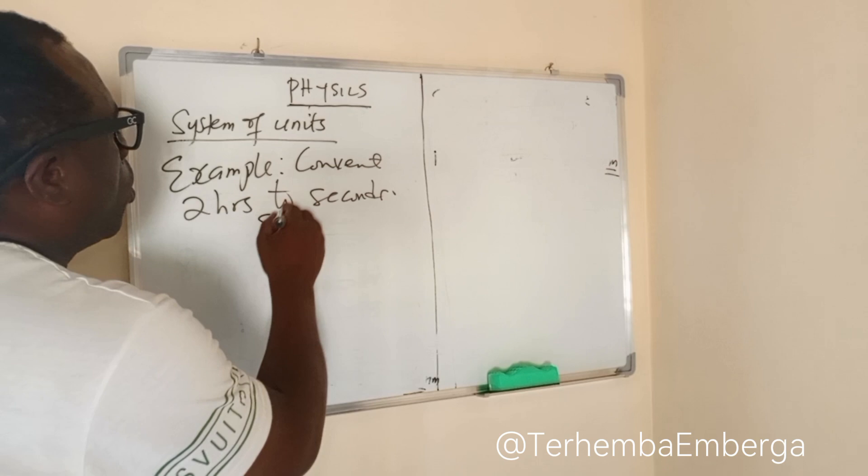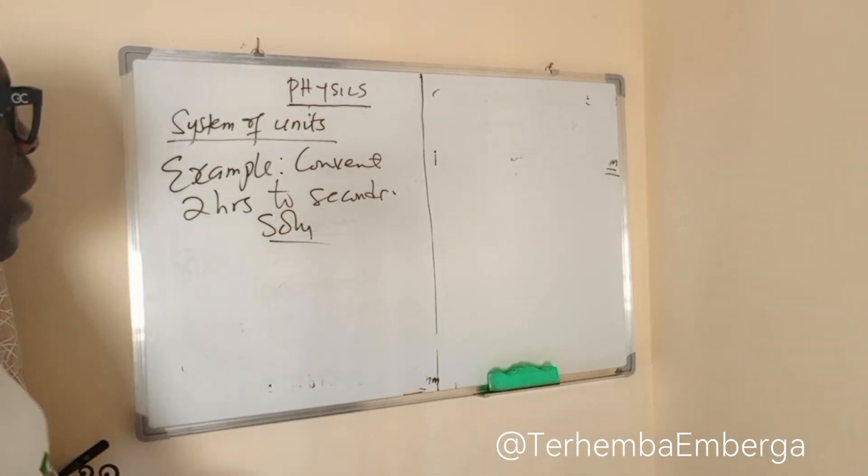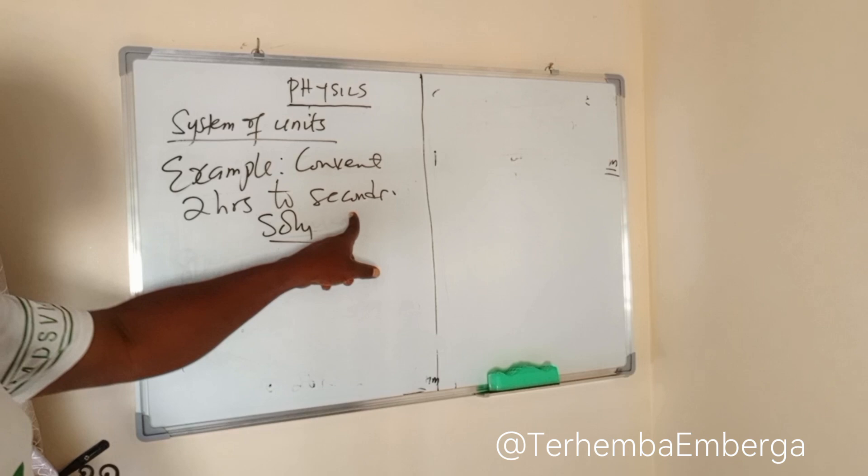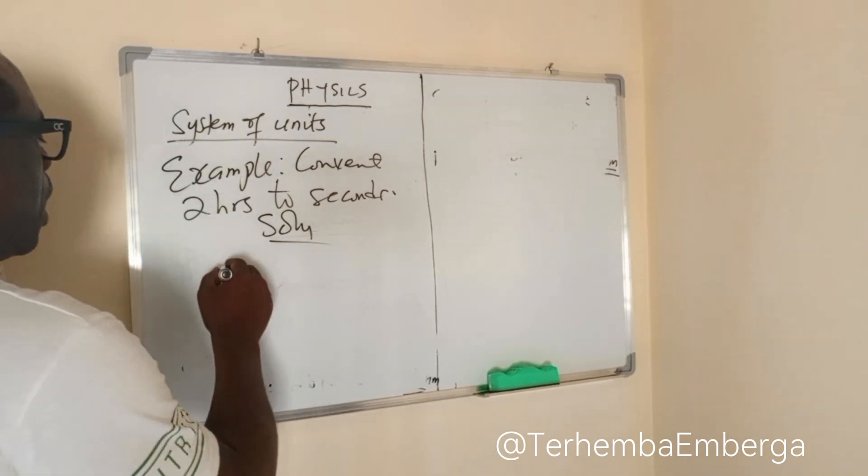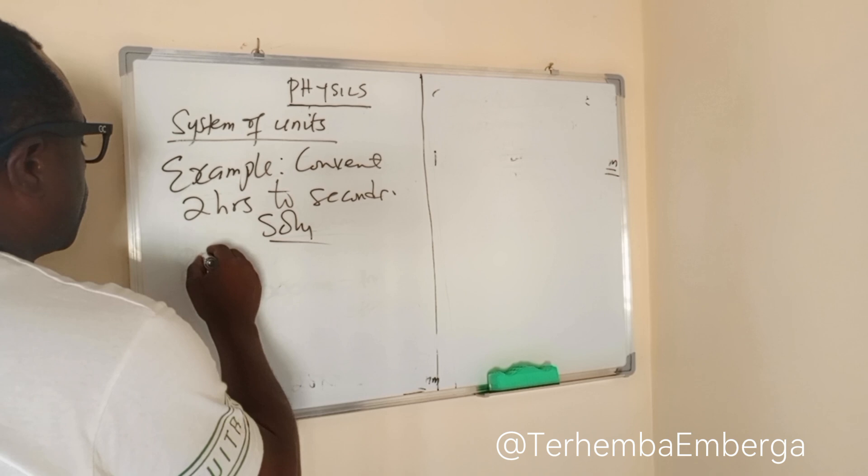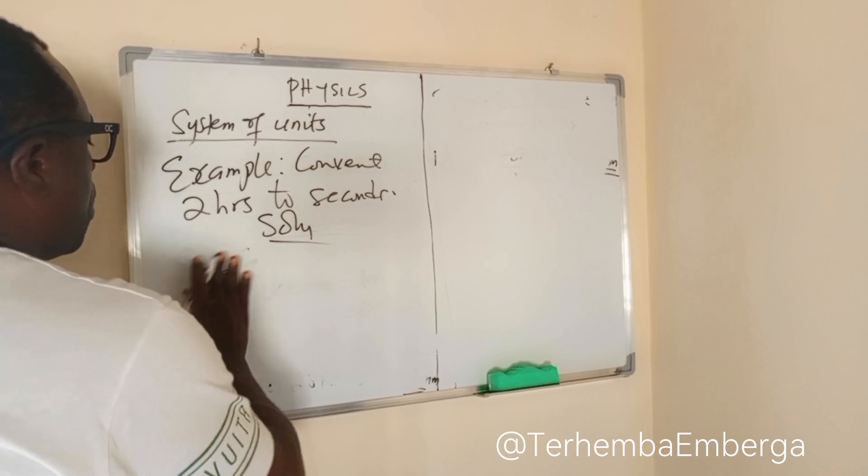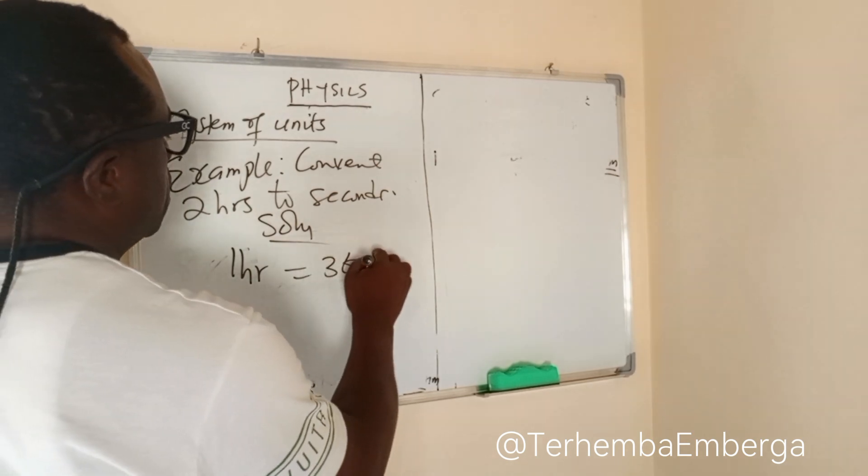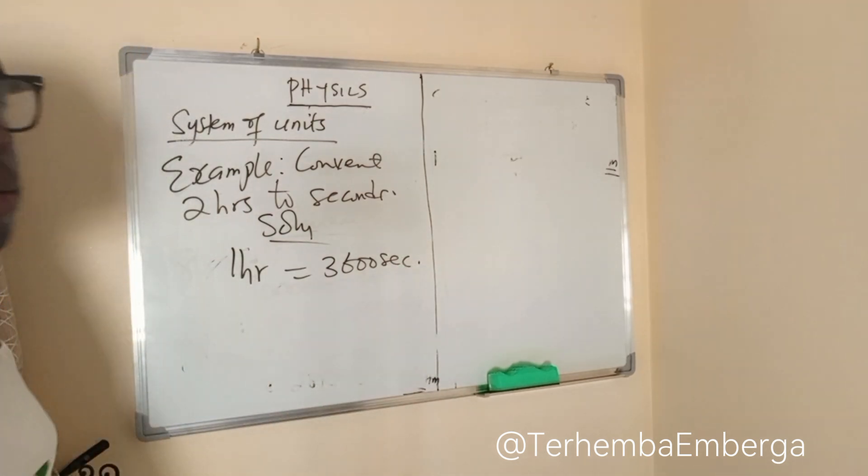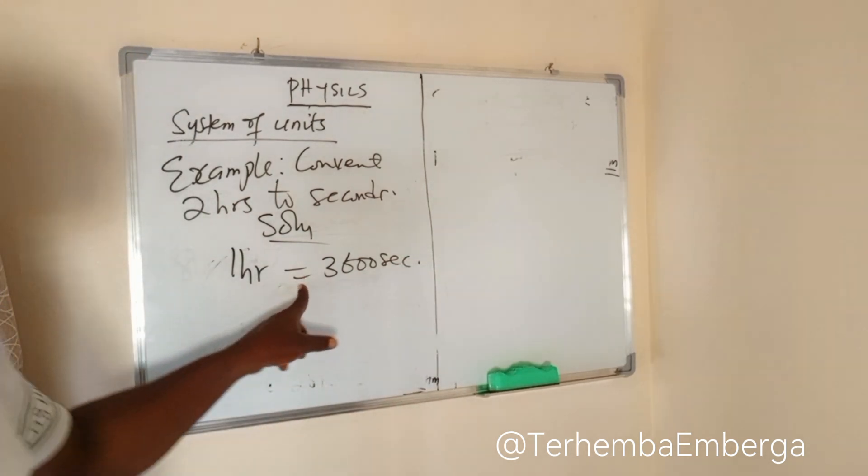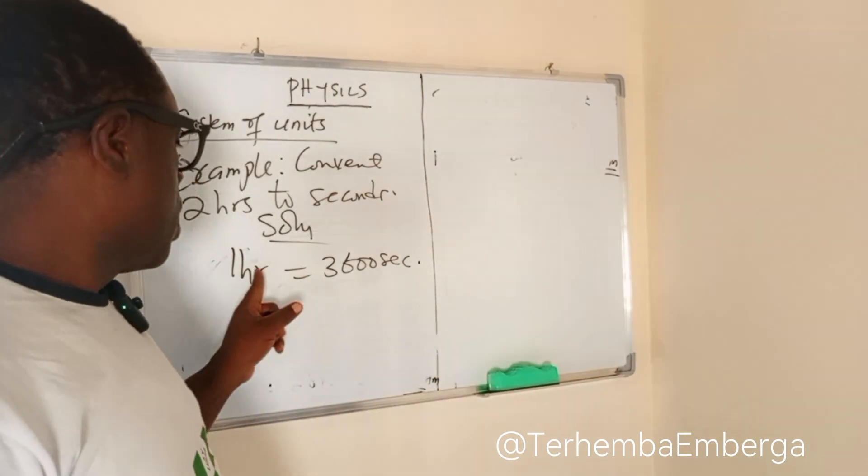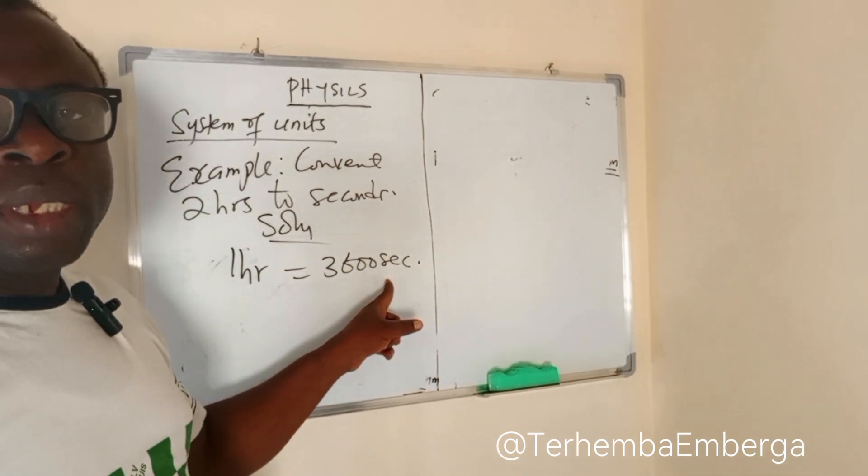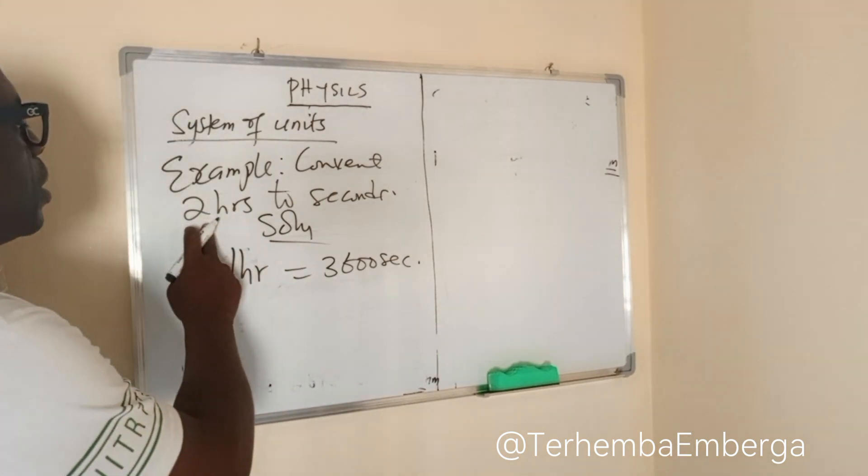What we need to do here is, first, the relationship between hours and seconds. And here is that one hour is equivalent to 3,600 seconds. That is the relationship between hours and seconds. And here we have two hours.